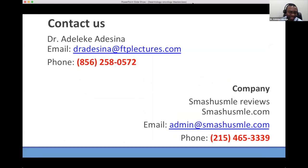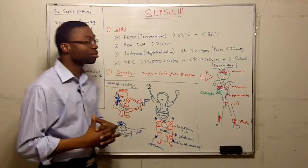Thank you for watching this video. I'm going to be giving away a free ebook on the insider secrets on how to score 260 on the USMLE. Make sure you watch this video to the end because I'm going to be giving you a link to download it. You have my direct line: draddition@ftplectures.com, phone number 856-258-0572, or visit smashusmle.com.